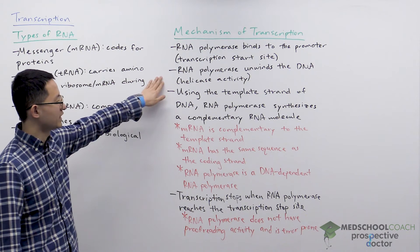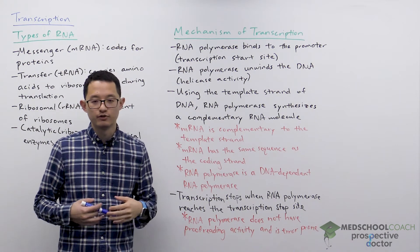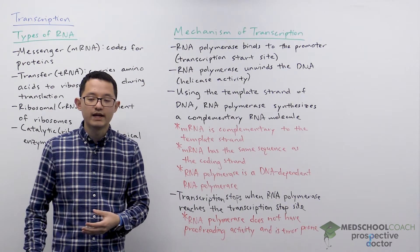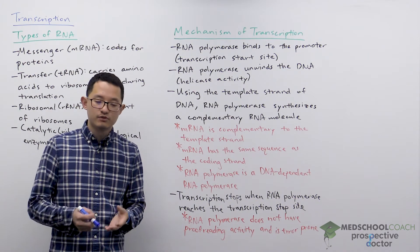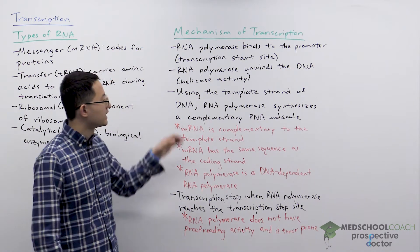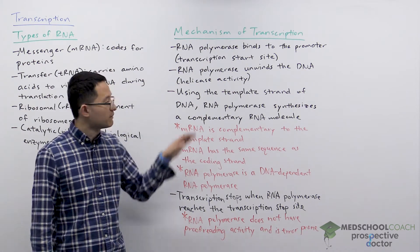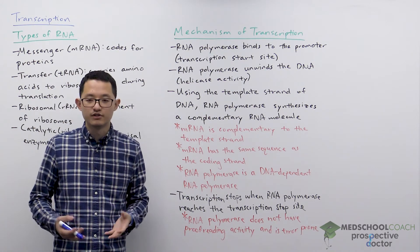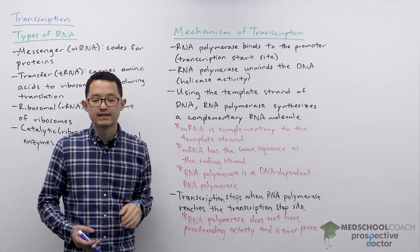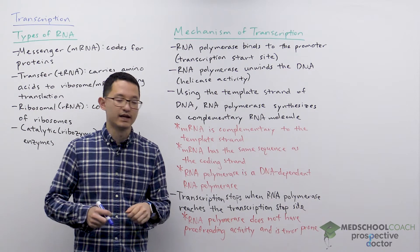Once RNA polymerase binds, in order to use DNA as a template to create RNA, it needs to be able to unwind the DNA. And that's exactly what RNA polymerase does. So RNA polymerase, in addition to being a polymerase, also has helicase activity — it's able to unwind DNA.